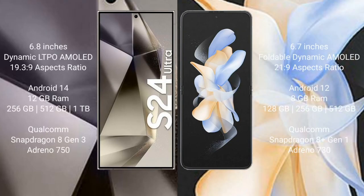Samsung Galaxy S24 Ultra comes with a 6.8-inch Dynamic LTPO AMOLED display. Samsung Galaxy S24 Ultra runs on Android 14, while Samsung Galaxy Z Flip 4 runs on Android 12.